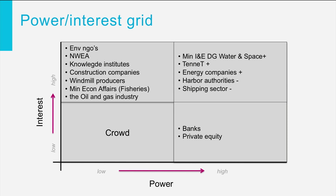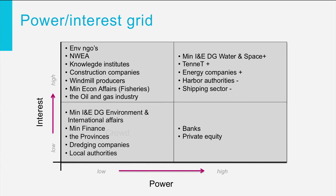The crowd then includes the Ministry of Infrastructure and Environment, the DG Environment and International, the Ministry of Finance, the provinces, the renting companies, and local authorities. They can be ignored for now.